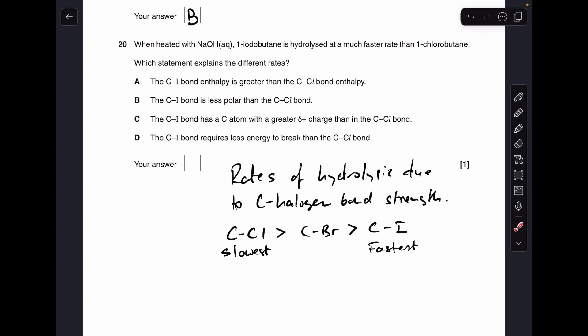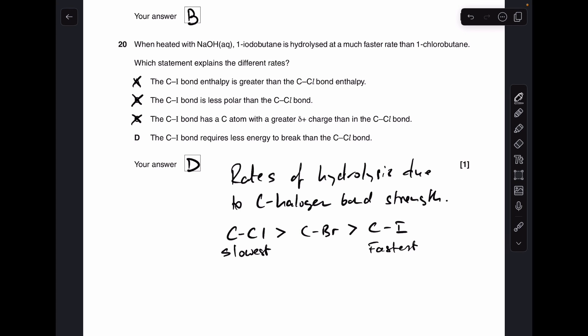And finally, number 20. There's just a reminder. Rate of hydrolysis for the haloalkanes due to the carbon halogen bond strength. And there's the order. The carbon chlorine bond is the strongest. So that's hydrolyzed the slowest. The carbon iodine bond is the weakest. And that's hydrolyzed the fastest. So A is wrong because the carbon iodine bond enthalpy is not greater than the carbon chlorine one. B is wrong. It's got nothing to do with polarity. C is wrong because it's got nothing to do with greater delta positive charge. So D must be the right answer. CI bond requires less energy to break than CCl. Yes, of course. So D must be the right answer.